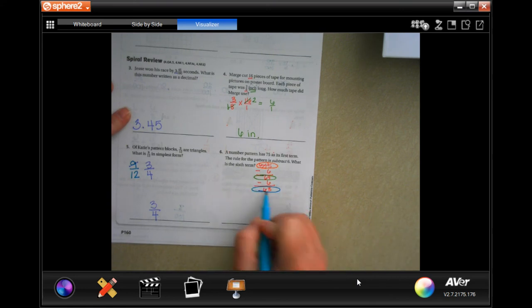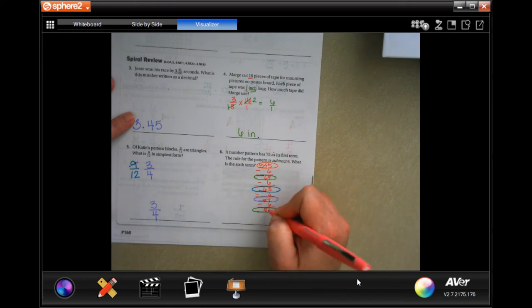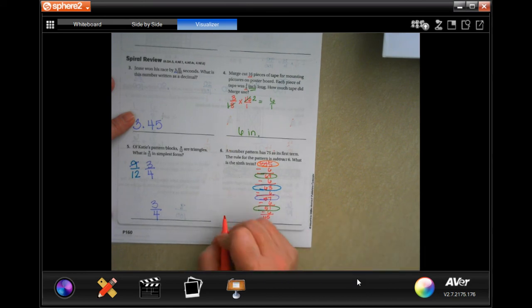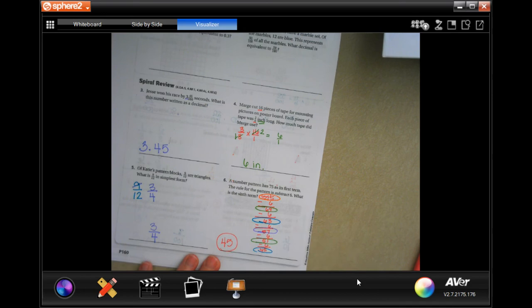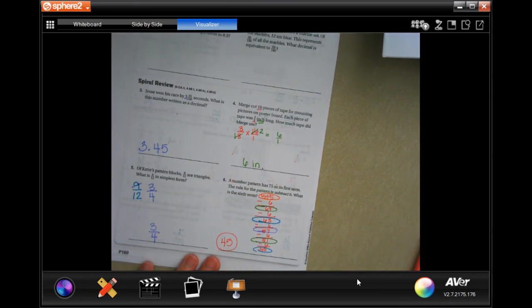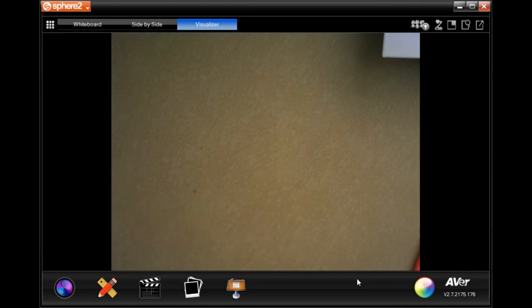We'll circle that one because that's the third term. We subtract 6 again and get 57, the fourth term. Subtract 6 again and get 51. One more. We subtract 6 again and get 45, so 45 would be our sixth term. One two three four five six times. 45. All right guys, thanks for hanging out for lesson 9.3. Come on back for 9.4.